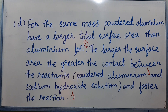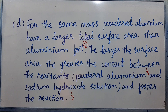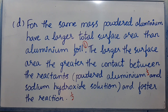For the same mass, powdered aluminum has a larger total surface area than aluminum filings. The larger the surface area, the greater the contact between the reactants.